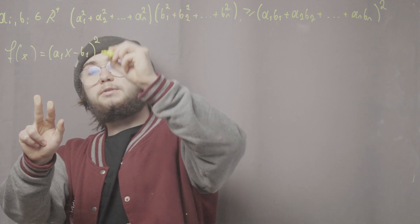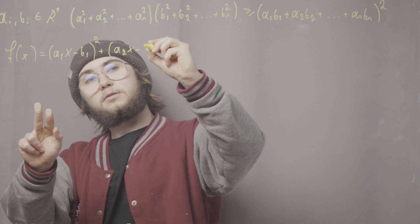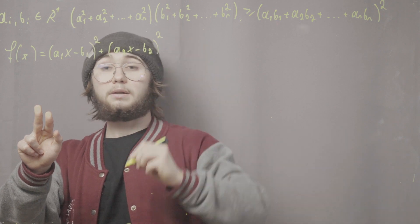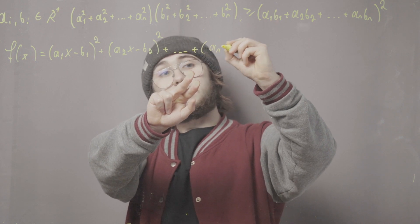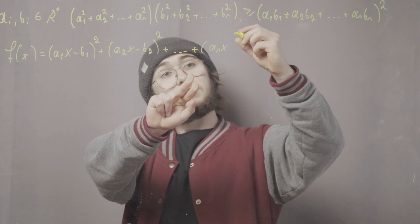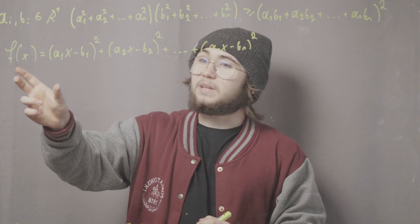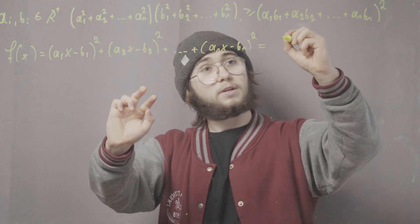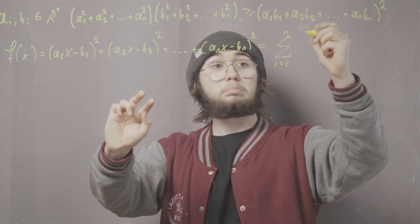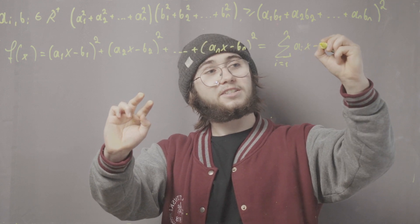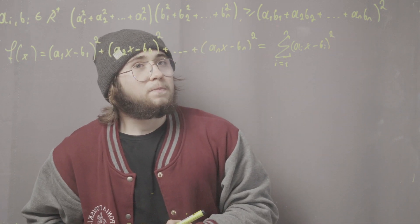We square the entire thing, then add a₂ times x minus b₂ and square that, continuing on until we get to aₙ times x minus bₙ and square that as well. This is actually a function we can rewrite using sigma notation as the sum from i=1 to n of (aᵢx − bᵢ)², and we call it f(x).